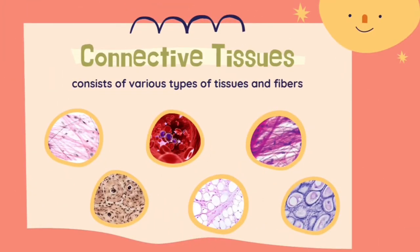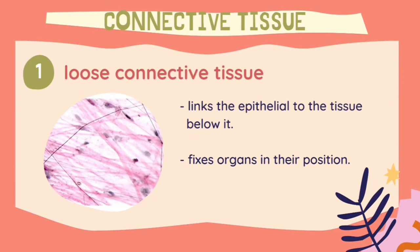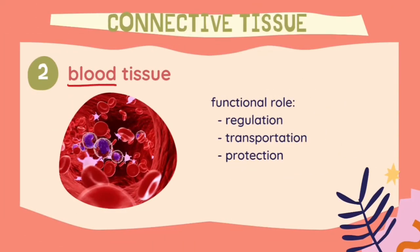We have come to the final tissue, which is the connective tissue. The connective tissue consists of various types of tissues and fibers that can be found throughout the whole human body. Today I will be focusing on six different types of connective tissues. The first type is the loose connective tissue. It functions to link the epithelial tissues to the tissues below it, and also to fix organs in their respective positions. Next, we have the blood tissue, which plays a functional role in regulation, transportation, and protection in the human body.